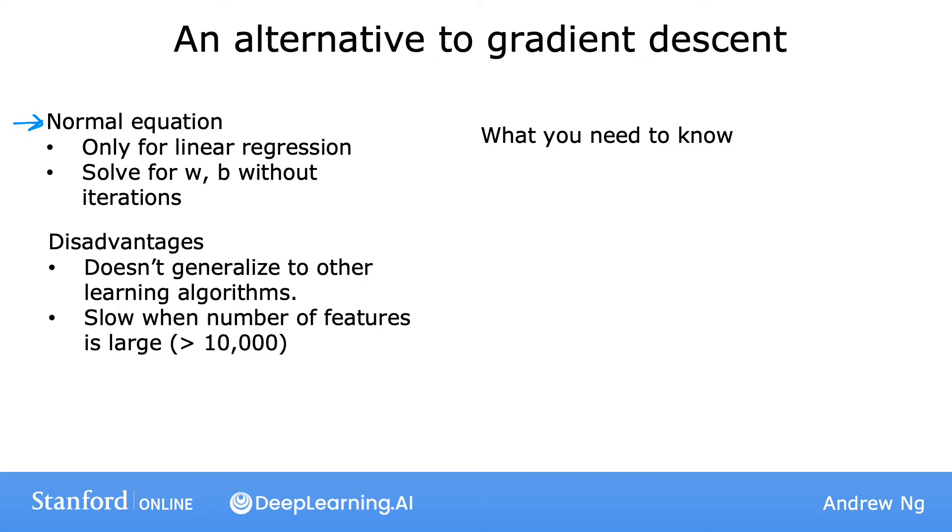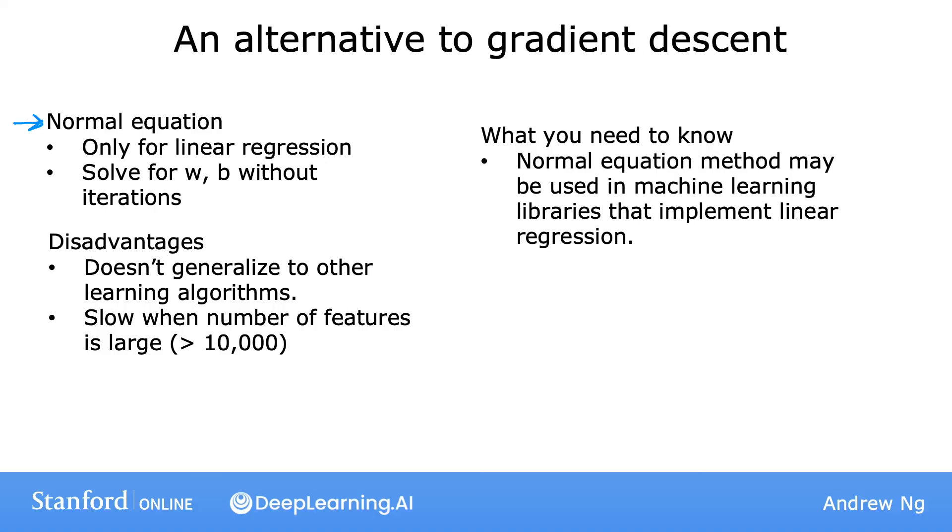Almost no machine learning practitioners should implement the normal equation method themselves. But if you're using a mature machine learning library and call linear regression, there's a chance that on the back end you'll be using this to solve for w and b.